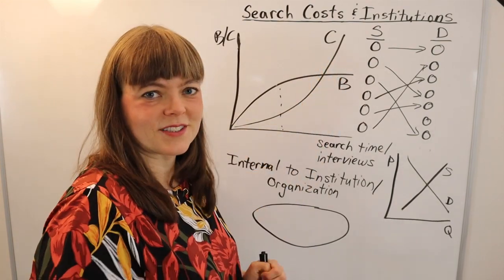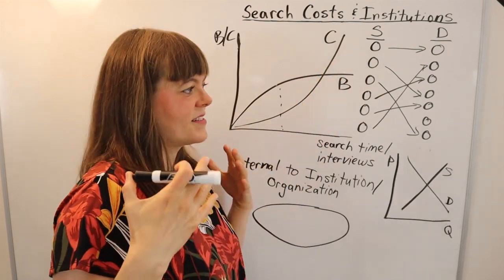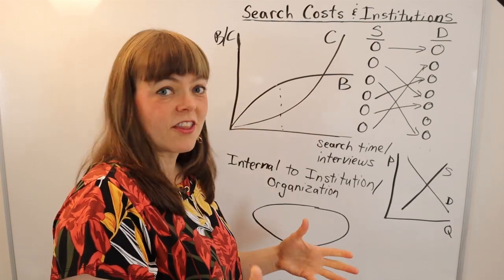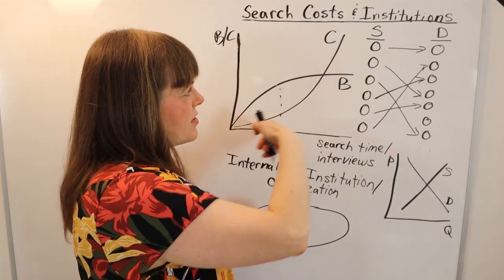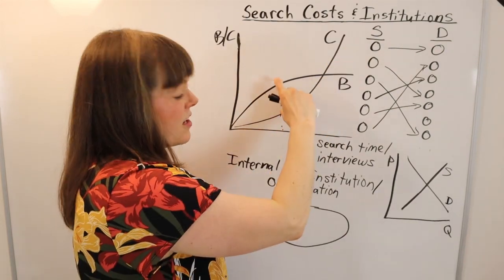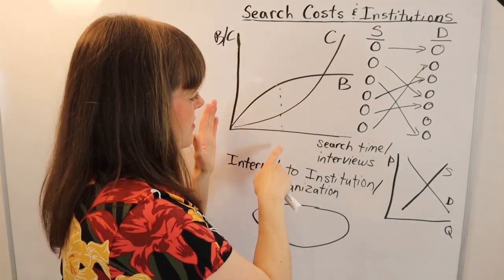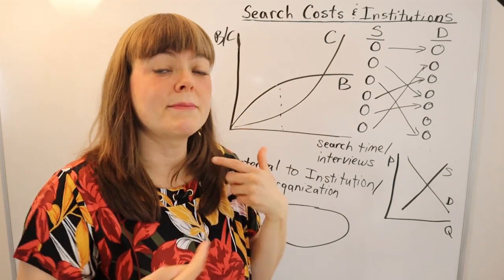And the costs are increasing because of course, the time that you're investing in the search, there's an opportunity cost to the people's time who are doing the interviews. So increasing marginal cost. Search theory is always about figuring out how long should we be searching for?